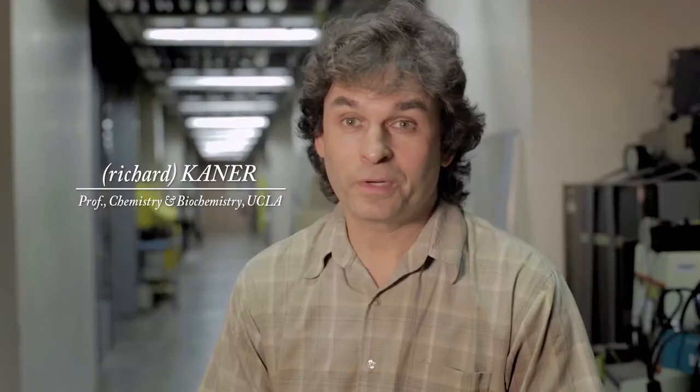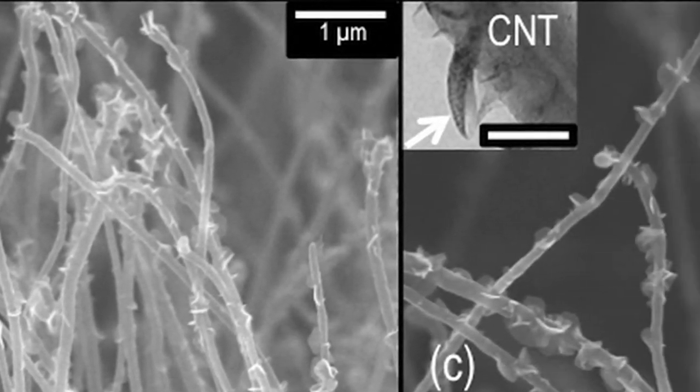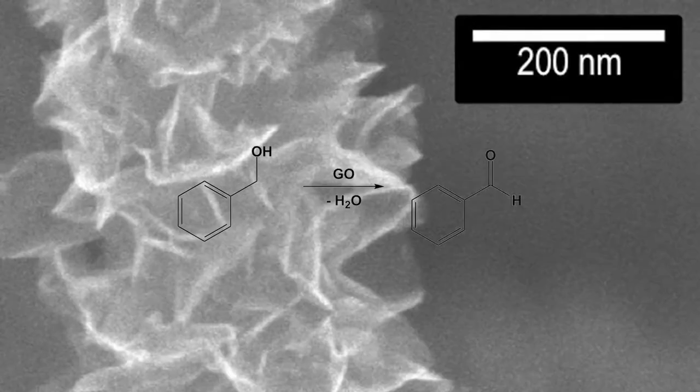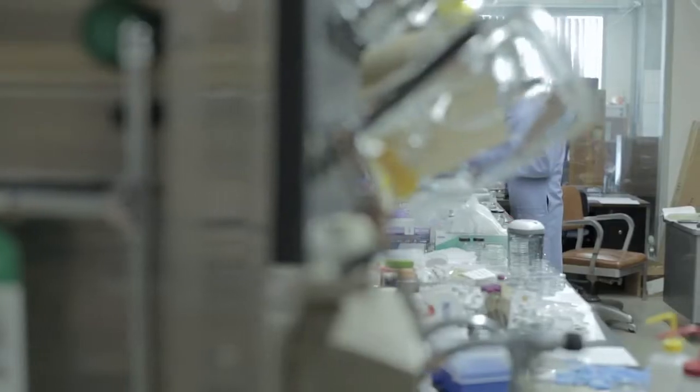Graphene is a single layer of carbon. It's one of the strongest materials ever known and it's completely flexible. The discoverers of graphene won the Nobel Prize in 2010. However, the method they used to make it, which was taking graphite and peeling it with scotch tape, is not practical. So we set out to find a better method.